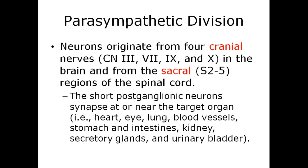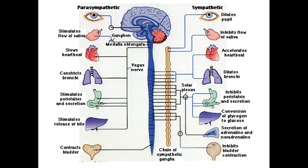Parasympathetic division neurons originate from four cranial nerves in the brain and from the sacral regions of the spinal cord. The short postganglionic neurons synapse at or near the target organ. This image compares parasympathetic versus sympathetic, showing the origination of the preganglionic fibers in the thoracolumbar region for the sympathetic and in the cranial and sacral regions for the parasympathetic.